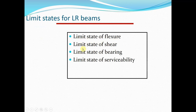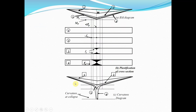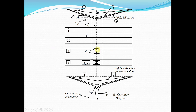The limit states for laterally supported beams are: limit state of flexure, limit state of shear, limit state of bearing, and limit state of serviceability. As load increases on a simply supported beam, it progresses through four stages of deflection behavior, eventually transitioning from elastic to plastic range, with full plastification of the section causing hinge formation and continuous rotation — this is the plastification of section.